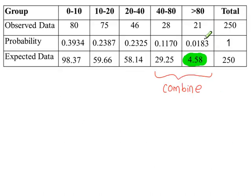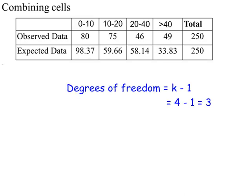So completing the table gives the following values. This E value is less than 5, so we're going to combine these two categories to have a new class, more than 40. Four classes, three degrees of freedom.